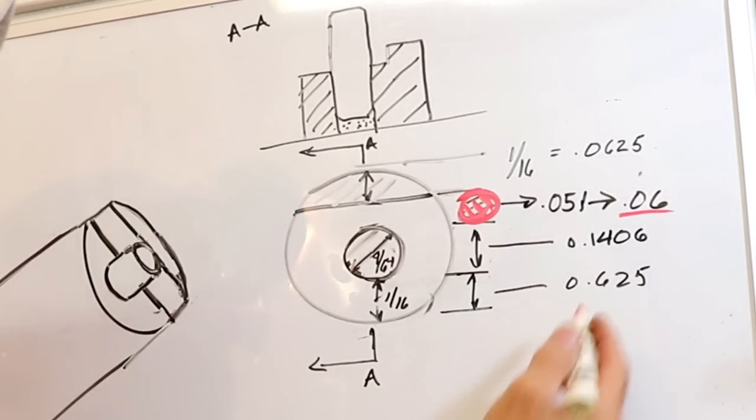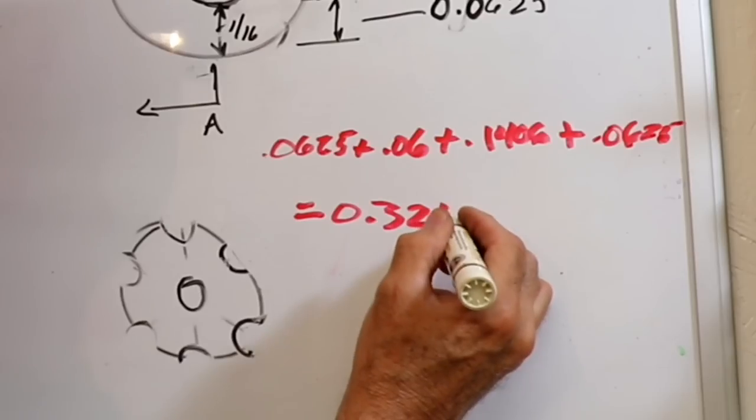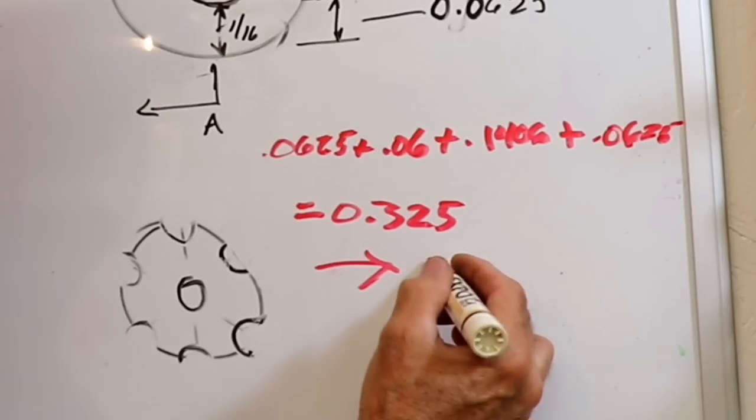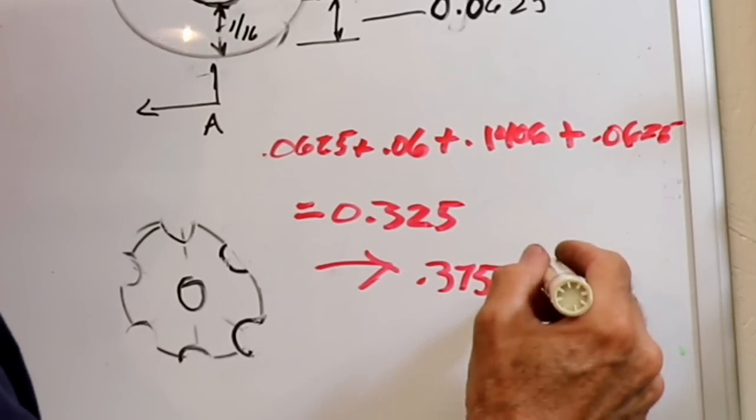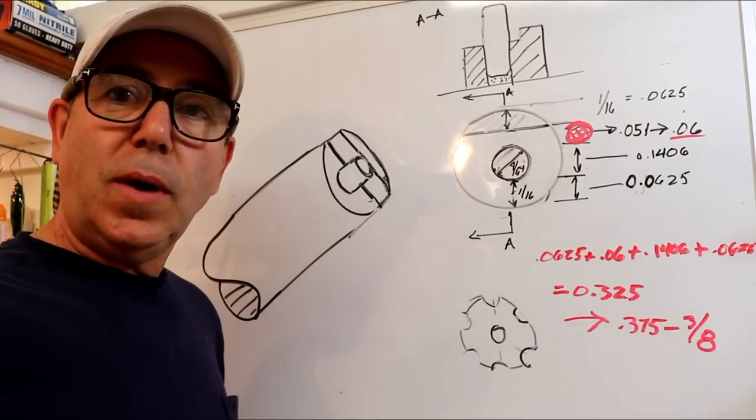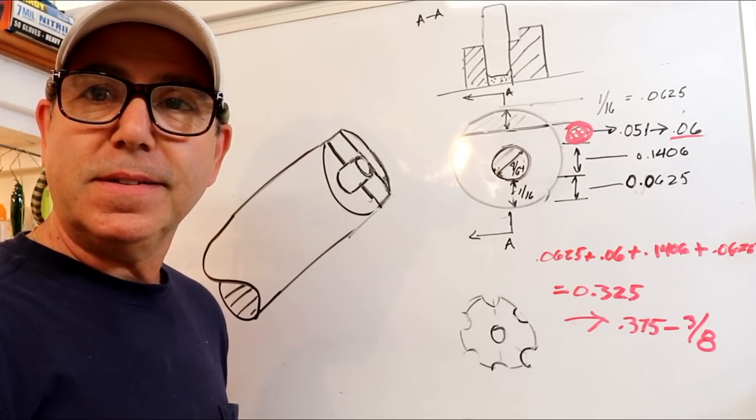And then the amount of material you want left on the edge is, I'm going to call it a sixteenth. You can make it thinner. So that's 0.0625. So we're going to add all this together. So that equals 0.325. So I'm going to go ahead and round that up to 0.375. That's 3/8ths. That's an easy bolt to find. So let's go out to the shop and rummage through my bolt bins and see if I can find something.